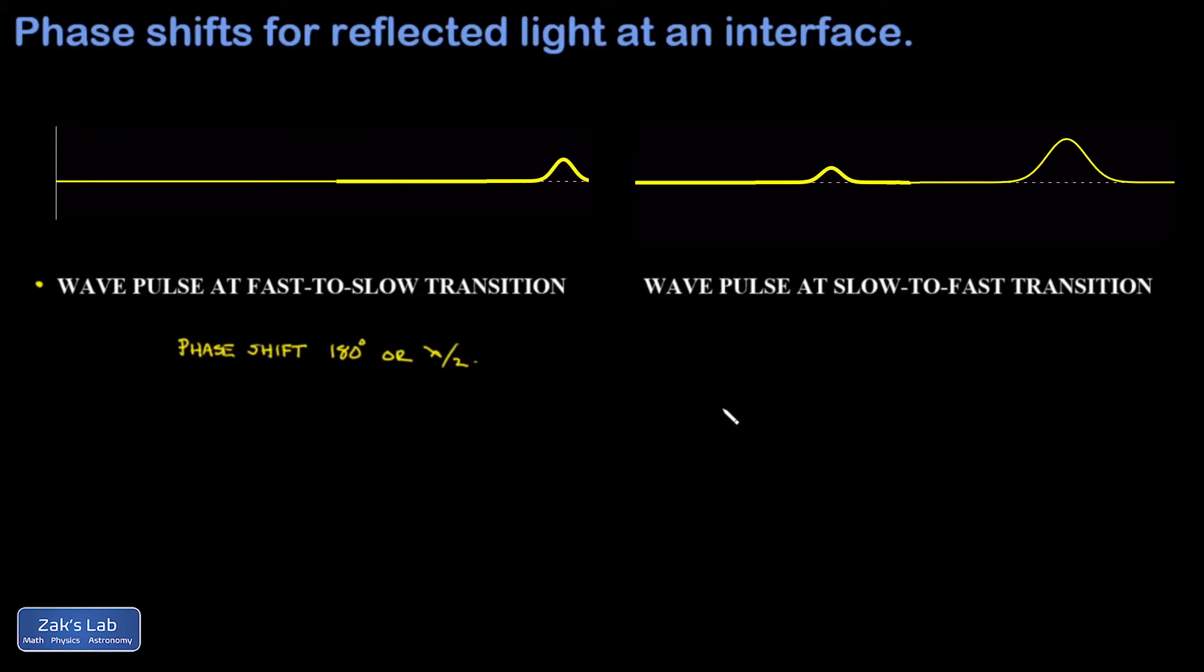So I made the thick string the slow medium, the thin string is the fast medium, and what we see in the animation is that a wave pulse entering the transition from slow to fast is not inverted when it gets reflected. Notice also that the wavelength becomes longer in the faster medium, and the same thing is true for light.